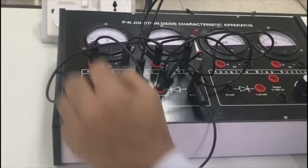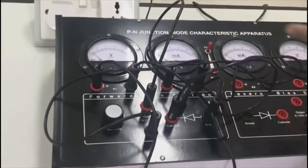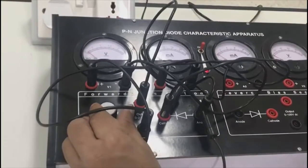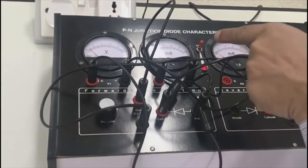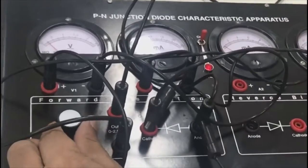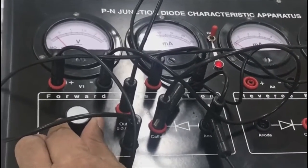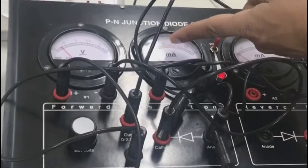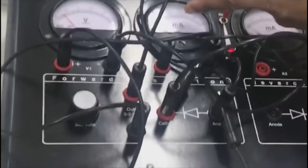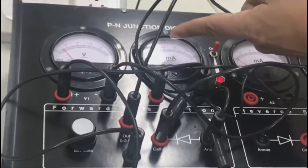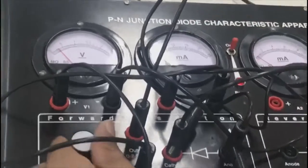Two lines make 0.1 volts - current is zero. At 0.2 volts, current is still zero. At 0.3 volts, you start getting readings. At the second line, 0.5 times 2 equals 1 milliampere. As per that: 0.2, 0.3, 0.4, 0.5 volts.